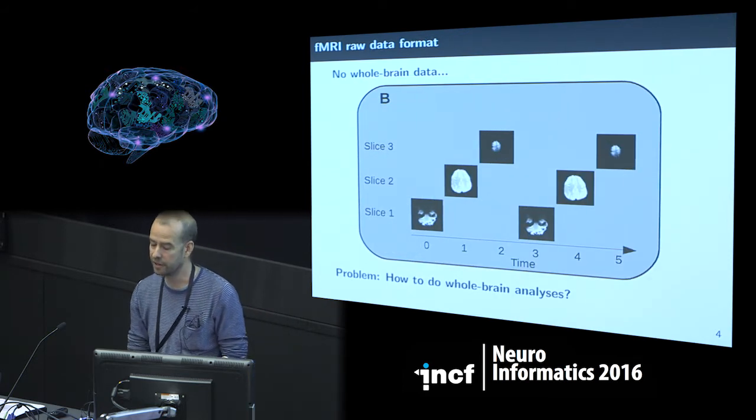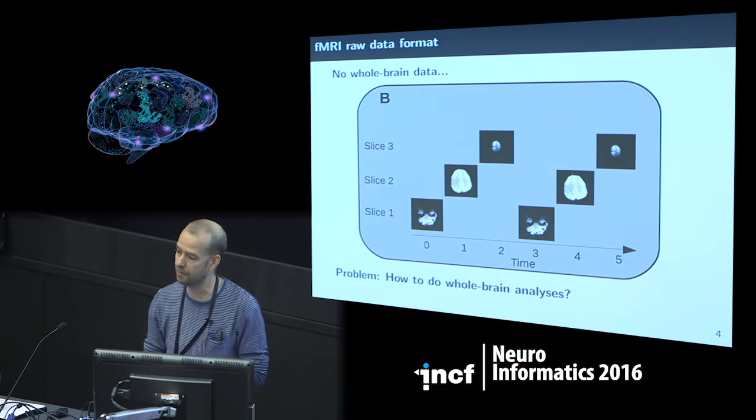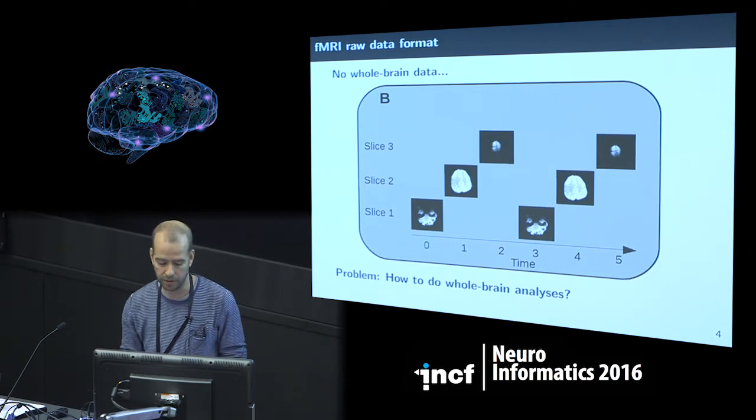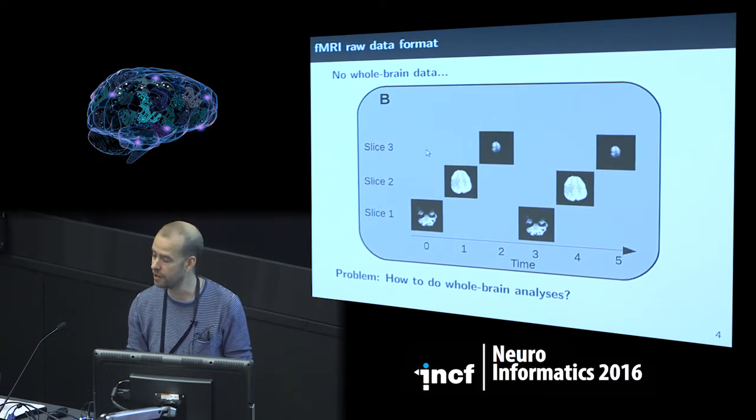Here is a different way to represent that. You have time on one axis and the three slices on another, and you can see that at each point in time you just have a small portion of the brain as your data. In this raw format, it's actually impossible to do whole-brain analysis because at no point in time do you have a whole brain available.